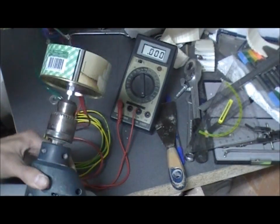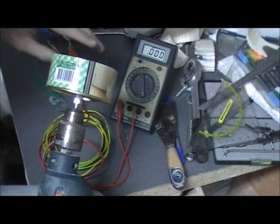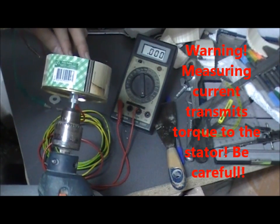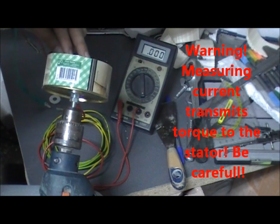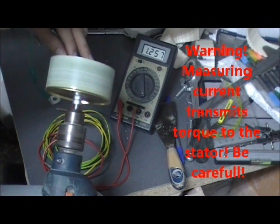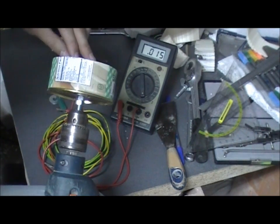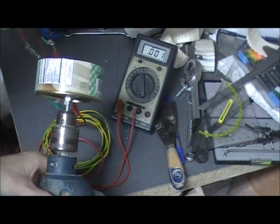Now let's try the current with the drilling machine. About 1.3 amps.